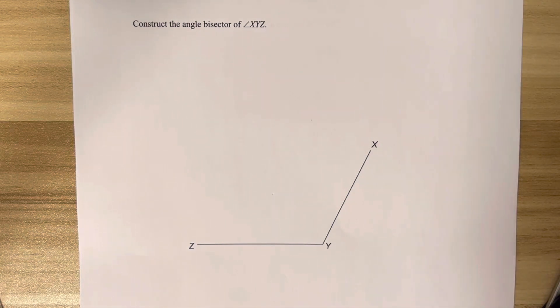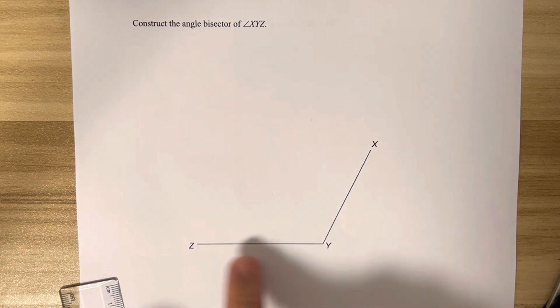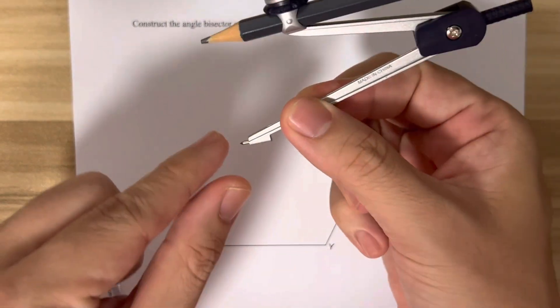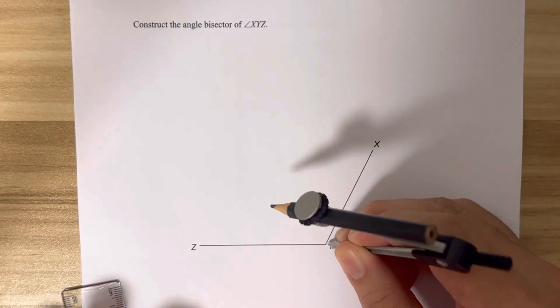Hello everyone, welcome to this part of the video where we are required to construct the angle bisector of angle XYZ. Place the compass pointed tip at the angle.